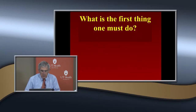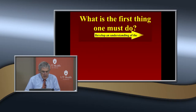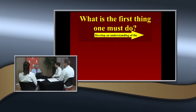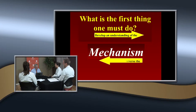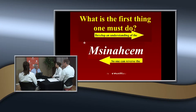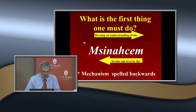So the first thing you've got to do in determining how you're going to treat this is to have an understanding of the mechanism. Because what you have to do is reverse the mechanism — that's mechanism spelled backwards.